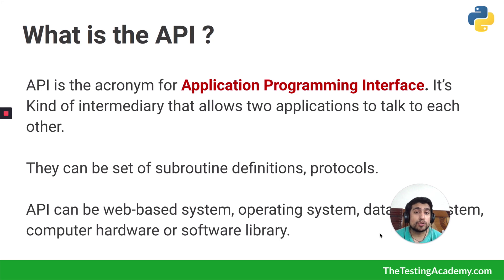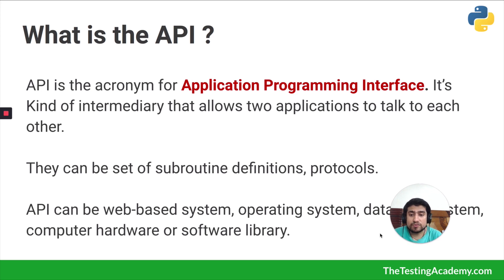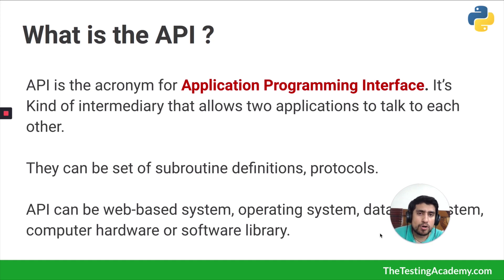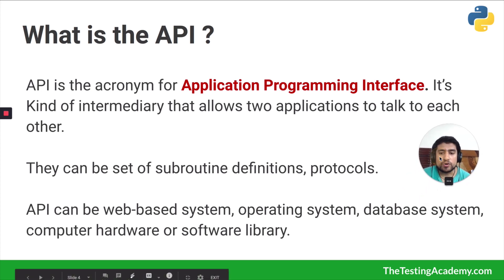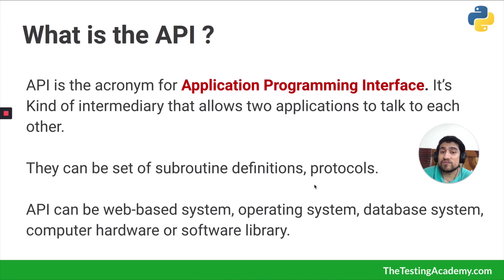API acts as an intermediary between two applications and allows them to communicate with each other. We have a client and a server — they can communicate using these APIs. APIs can also be a set of subroutines or protocols — certain kinds of functions that you want to execute.